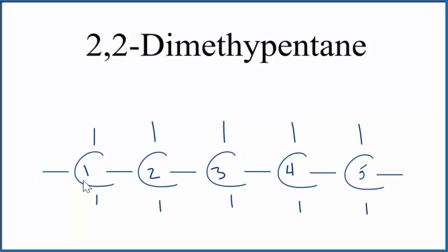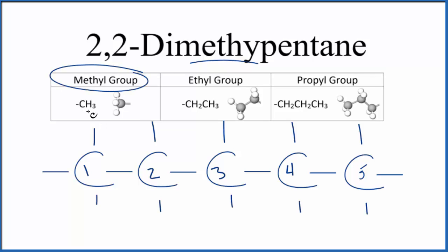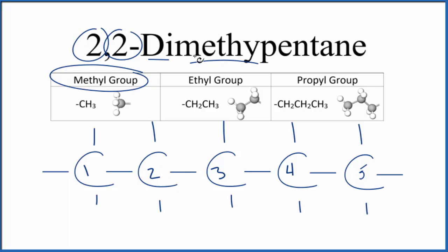These lines here go to hydrogens. The methyl group is just CH3 — a carbon with three hydrogens around it. We have di, meaning two of these methyl groups, and they're both going to be on the second carbon right here. So 2,2-dimethylpentane.